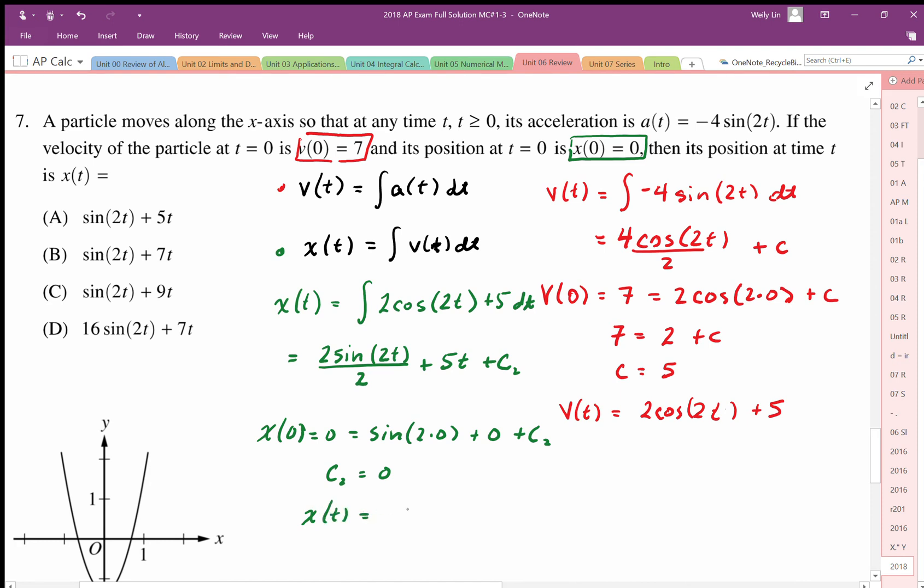So the x function then, my x of t is sine 2t plus 5t plus 0. So that's it. So the answer is A.